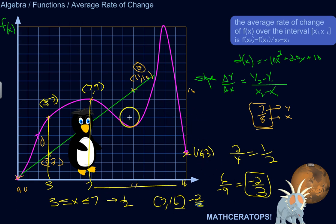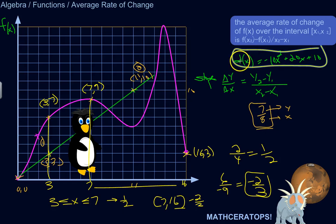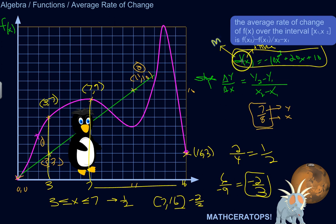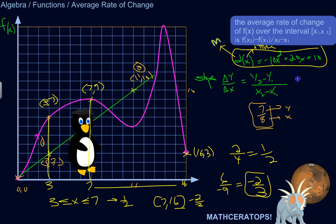Now that was a graph of a function without an equation. But what if you have an equation? For example, the distance as a function of x is: d(x) = negative 10x squared plus 20x plus 10, where x stands for time in seconds and distance is in meters. You could find the average rate of change of this function over a certain interval — let's say from 0 seconds to 10 seconds.